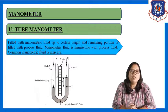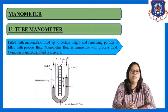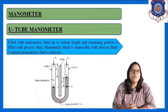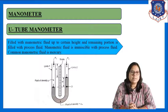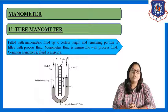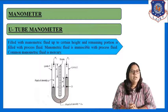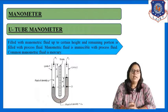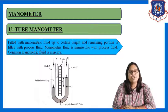First of all, we have to understand what is the meaning of manometer and what is the use of that. Basically, manometer is used to measure the pressure difference, and generally there are three types of manometer which are used in industrial applications: U-tube manometer, inclined manometer, and differential manometer.